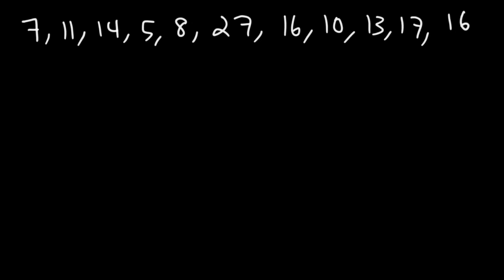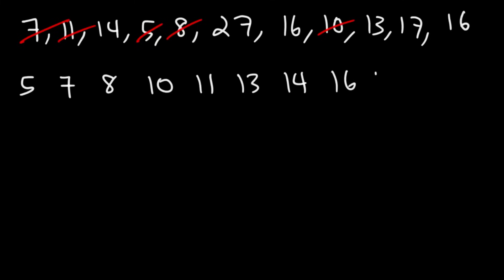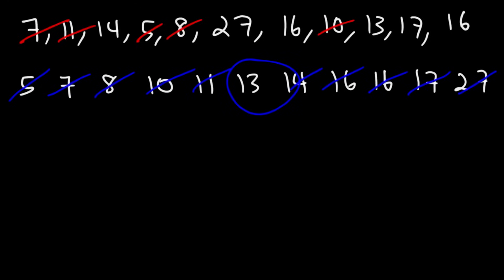As always, the first thing we should do is organize the data. The lowest number is 5, then 7, 8, 10, 11 — crossing them off as we go — then 13, 14, 16, another 16, 17, and 27. Now to find the quartiles, we determine the median of the entire data set, which will be Q2. Eliminating from the outside in, we find that 13 is in the middle — so Q2 equals 13.